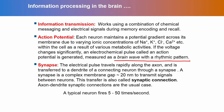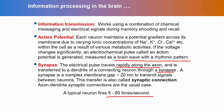The next term is synapse. The electrical pulse travels rapidly along the axon — and I mentioned that this axon is like a transmission line — and this electrical pulse is transferred to a dendrite of a connecting neuron through what we call a synapse. A synapse is a complex membrane gap which is about 20 nanometers, used to transmit signals between neurons. This transfer is also called a synaptic connection; typically we think of axon-to-dendrite synaptic connections, though there are also dendrite-to-dendrite connections. A typical neuron fires 5 to 50 times a second — this is an important thing.